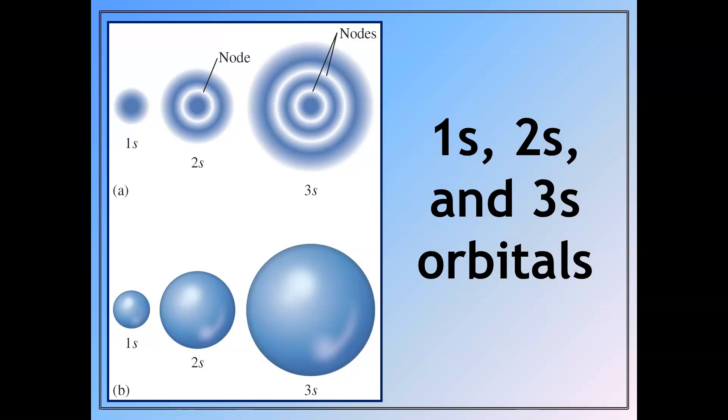So here is an example of some of the different orbitals. These are specific to S orbitals. A node is a point at which we would not expect an electron to be located.